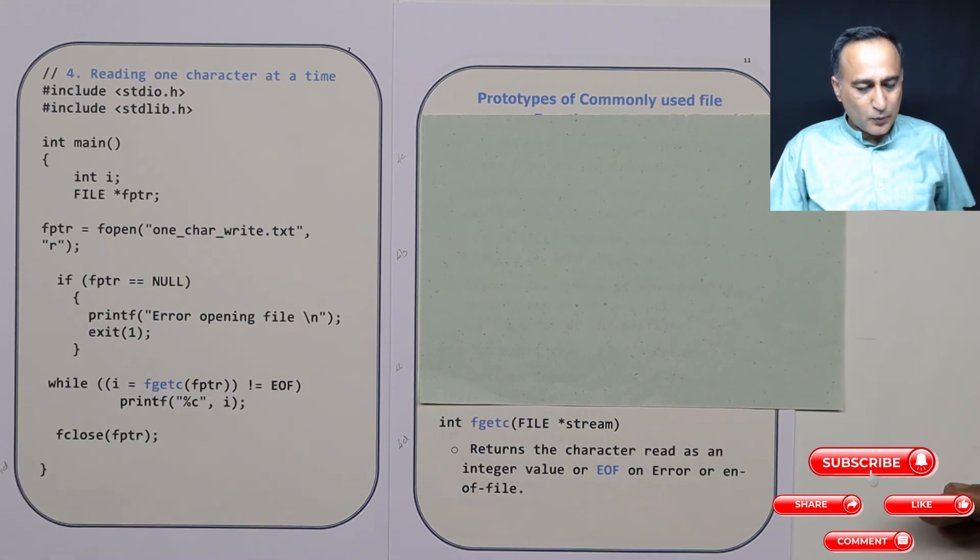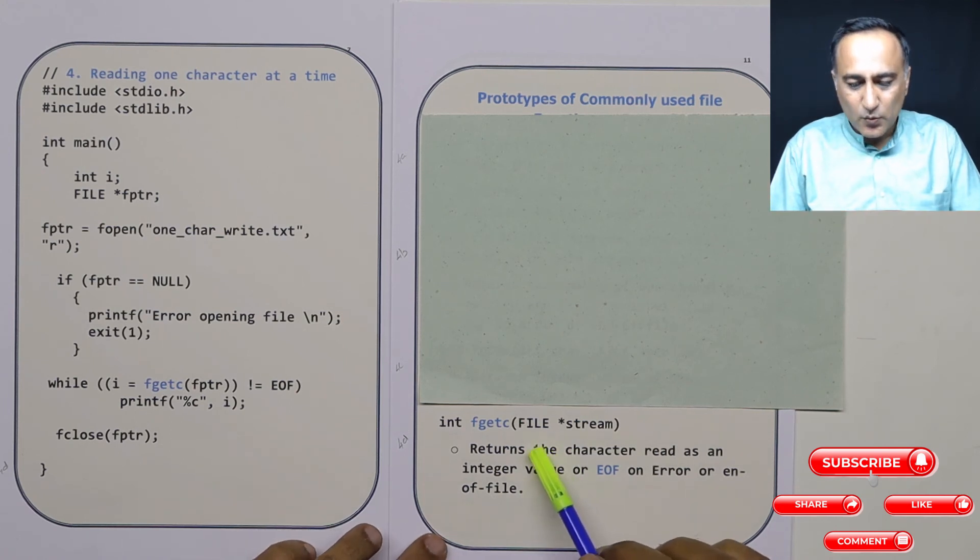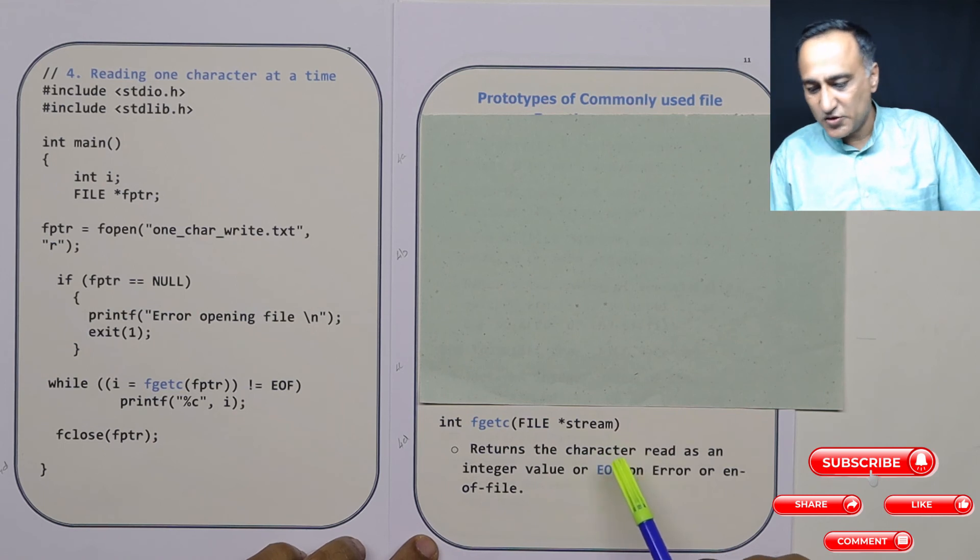If you want to take a look at the prototype of fgetc, quite simple. fgetc has only one prototype, it is file star stream.